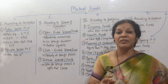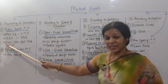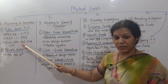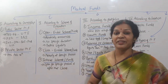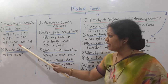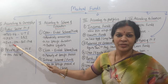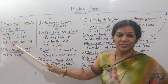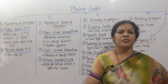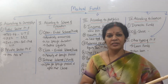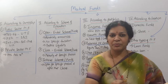SEBI gave licenses to banks like Indian Bank, Canara Bank, Bank of India, Punjab National Bank, and also LIC entered into mutual funds. These are all public sector mutual funds — they are government entities.